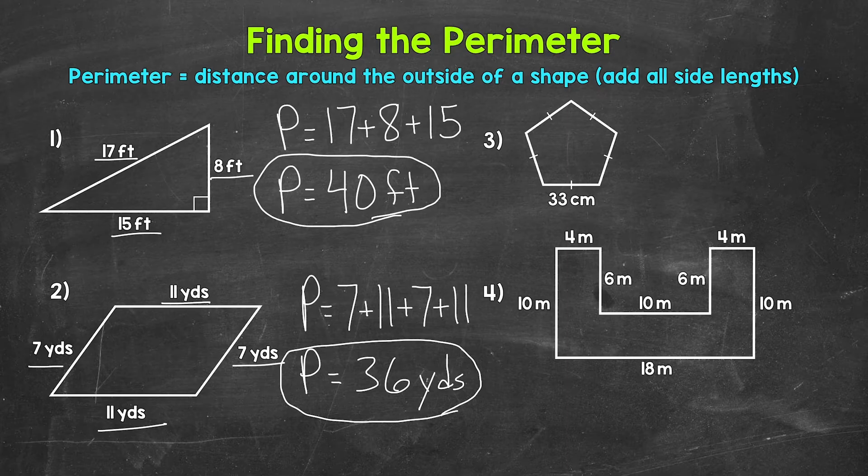Now again, it doesn't matter what order we add those side lengths in. For example, if we do 7 plus 7 plus 11 plus 11, we still get 36 yards.